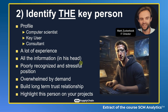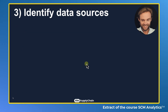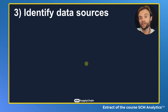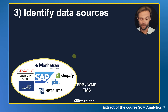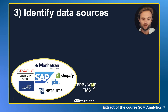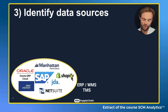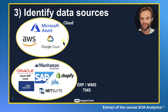The third step is to identify the data sources. This key person will help you find where the data lives. Always go back to the source. If you have data in the ERP, focus on the ERP system, or the WMS — warehouse management system — like Manhattan, or the TMS — transport management system — whatever you use.